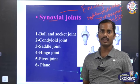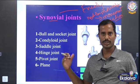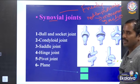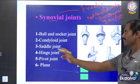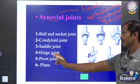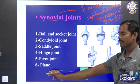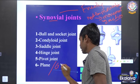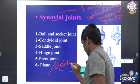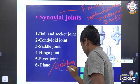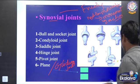Free movable synovial joints include: ball and socket, condyloid, saddle joint, hinge joint, pivot joint, and plane or gliding joint — these are the six types of joints.